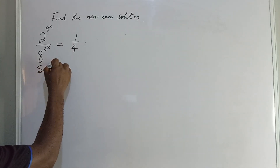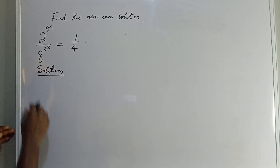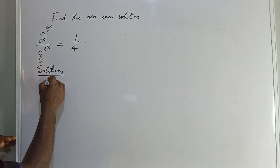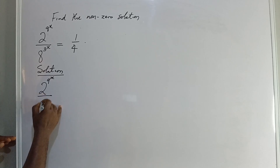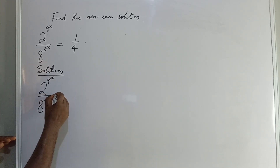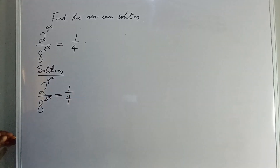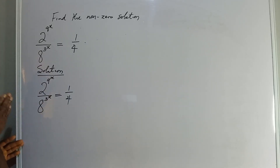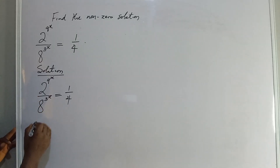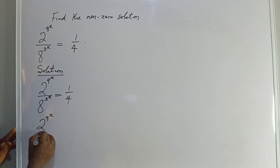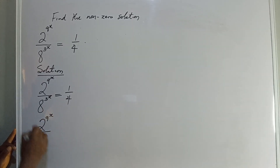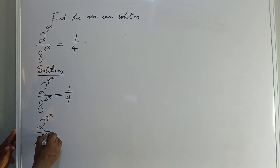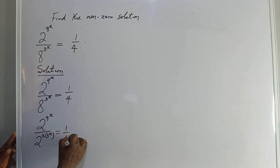So from here we have 2 to the power of 9 then 9 to the power of x divided by 8 to the power of 3 then 3 to the power of x equal to 1 over 4. What we are going to do is express the denominator of the left hand side in base 2 as well. So we have 2 to the power of 9 then 9 to the power of x divided by 2 to the power of 3, where x can be written as 2 to the power of 3 all to the power of, then multiply by 3 to the power of x, equal to 1 over 4.